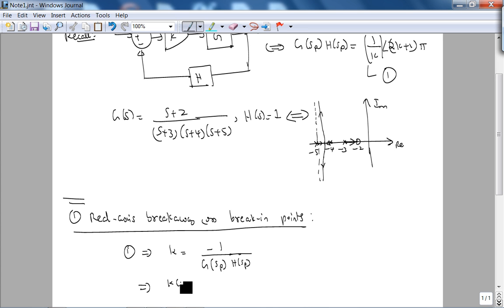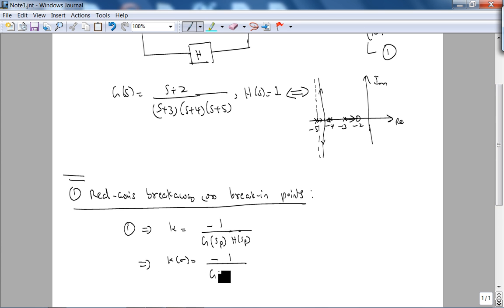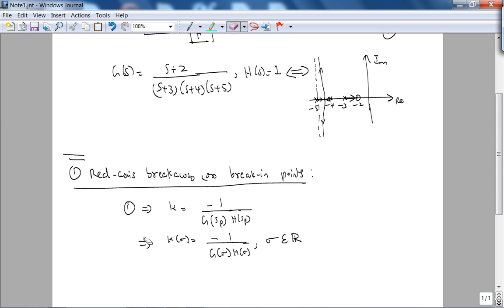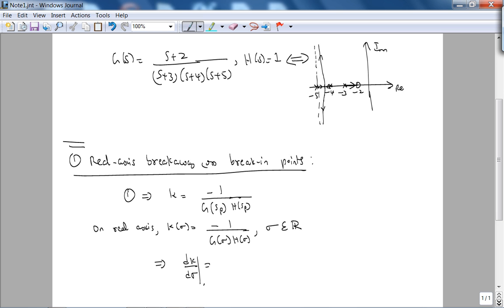So we are going to look at k as a function of sigma, a real number on the real axis. This implies that when we are breaking away, that is the maximum sigma we can get, so dk/dσ at sigma breakaway or break-in is going to be 0.